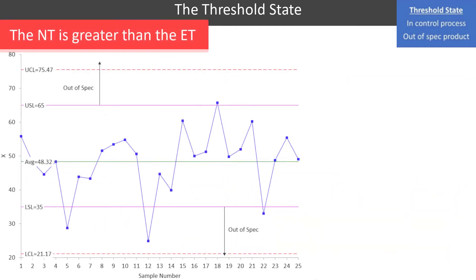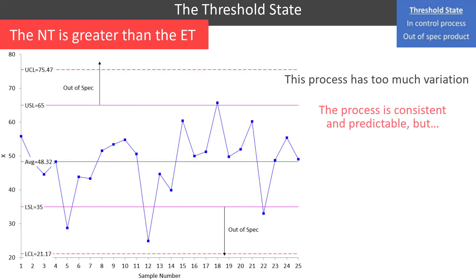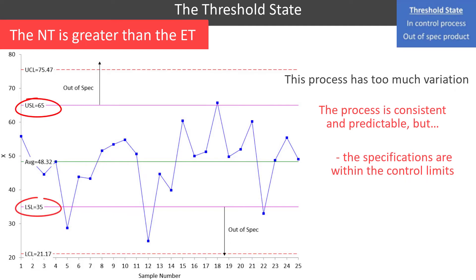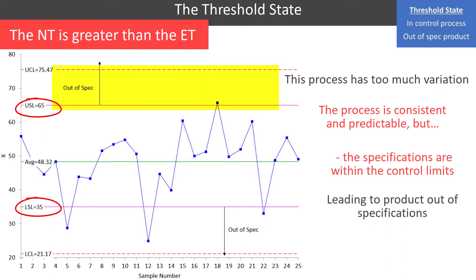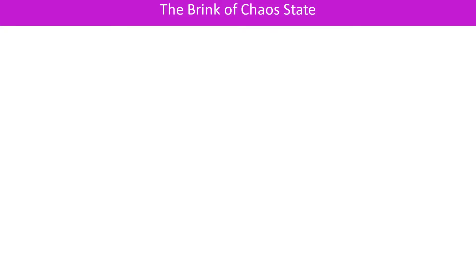Here we have the natural tolerance greater than the engineering tolerance. This process just has too much variation — it's in control and predictable, but the control limits are outside the specification limits. This leads to out-of-spec product on both the high side and the low side, and it's going to continue because the process is in control until you fundamentally change the process.